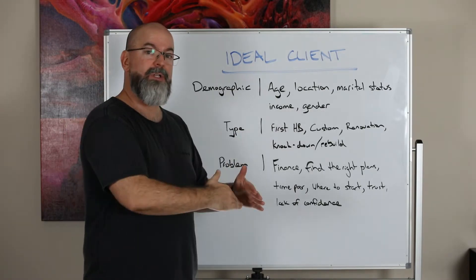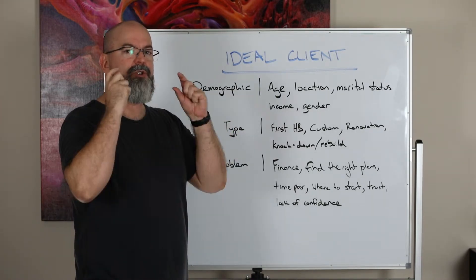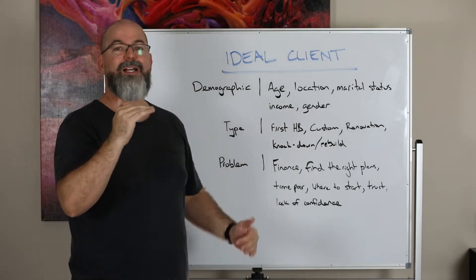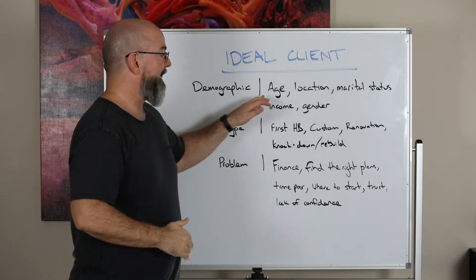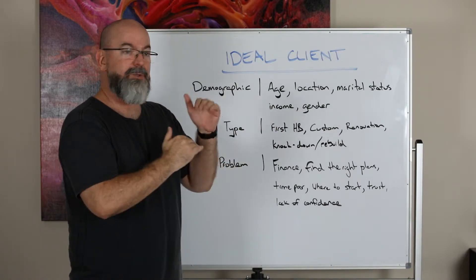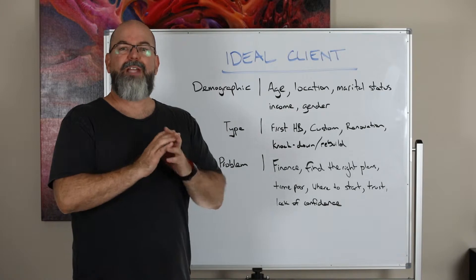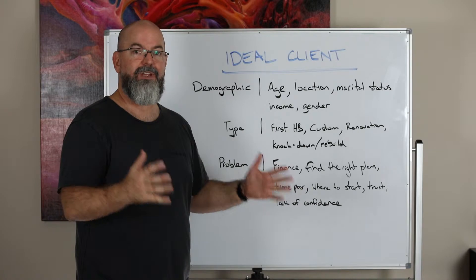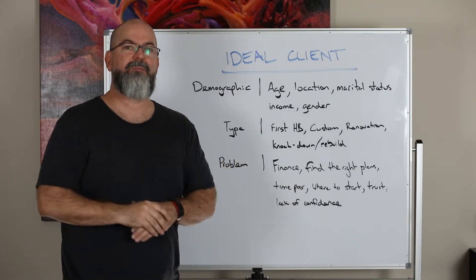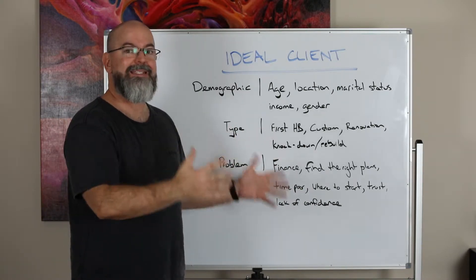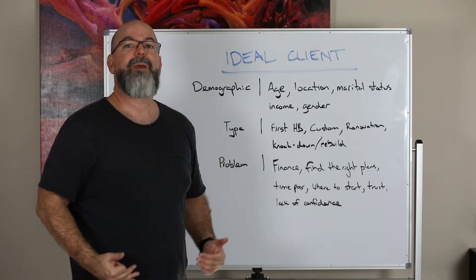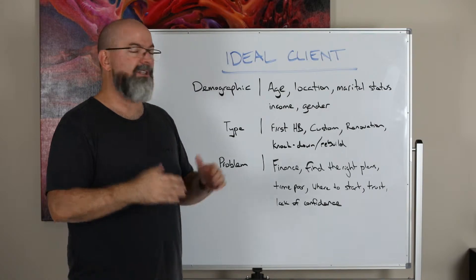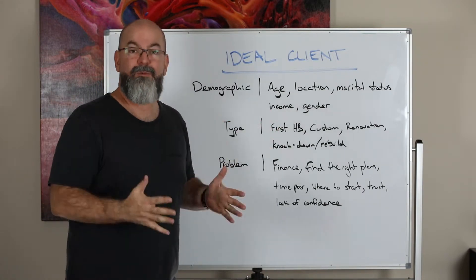Now, that doesn't mean you only build for them — it just means you know exactly who you're speaking to. Some people older will buy younger and some younger will buy older, but just define an age bracket. Location might be key suburbs or postcodes where there's an availability of land, or if you're in the luxury custom home market, key suburbs where people are building homes over a certain dollar value. Make sure you know that location, and also define where you won't build.